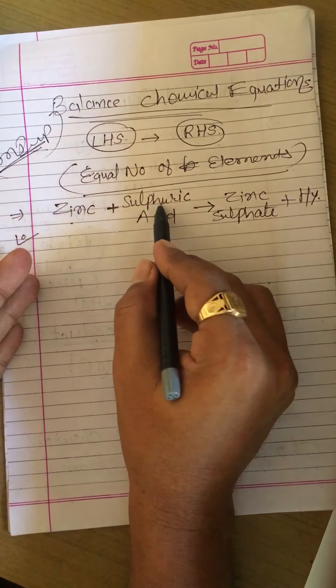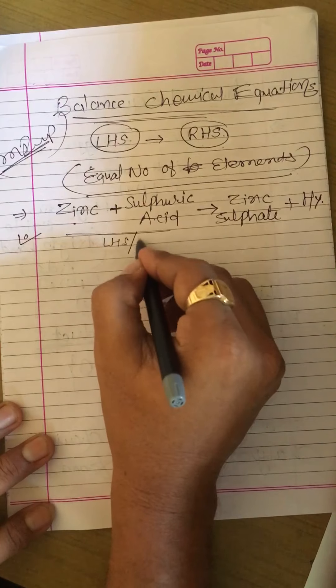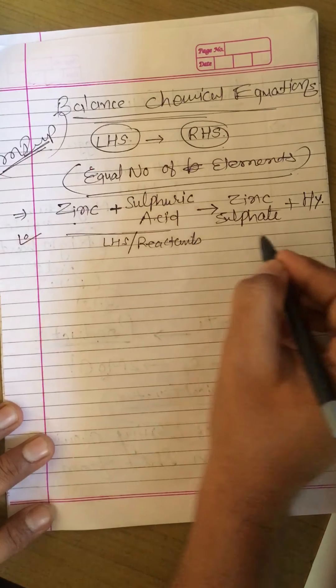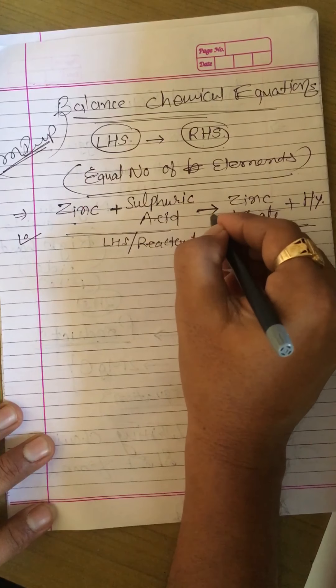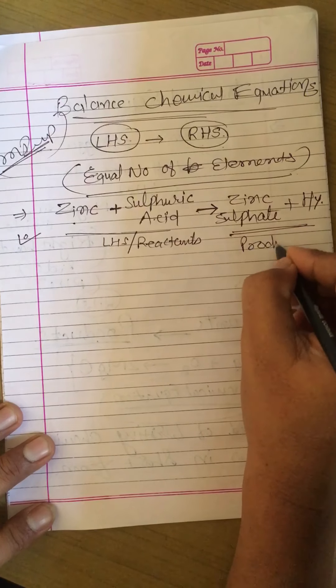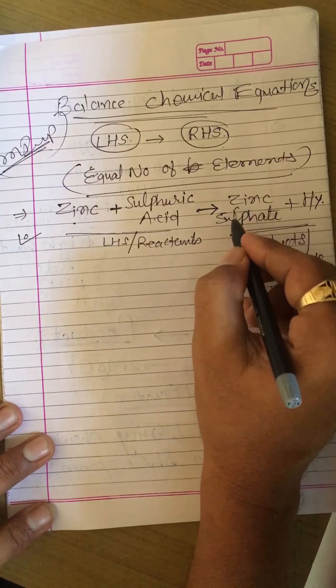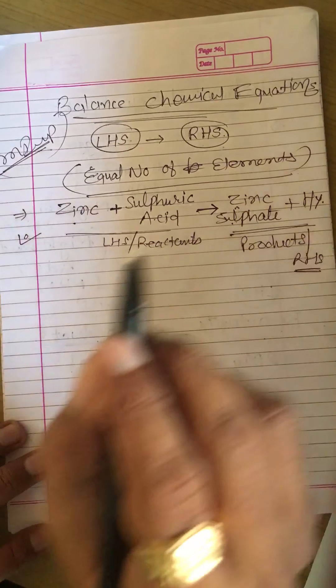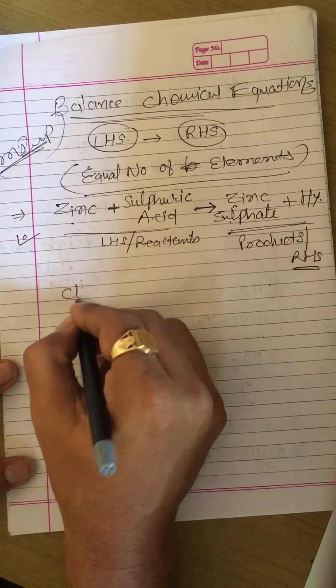...is reacted with sulfuric acid, which is called left hand side, also called reactants. And this is friends right side - in between we have to put one arrow, and right side we have to write the products which are zinc sulfate and hydrogen gas. Now friends, if I want to write the chemical equation...